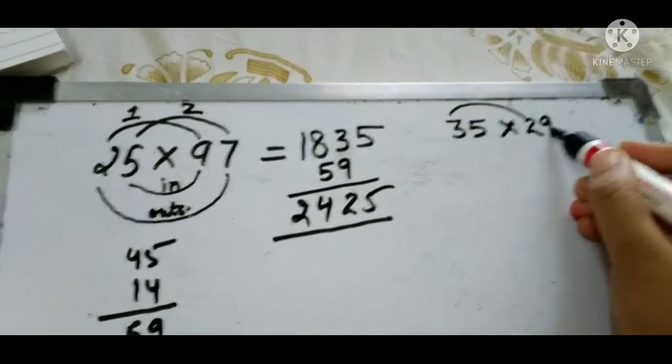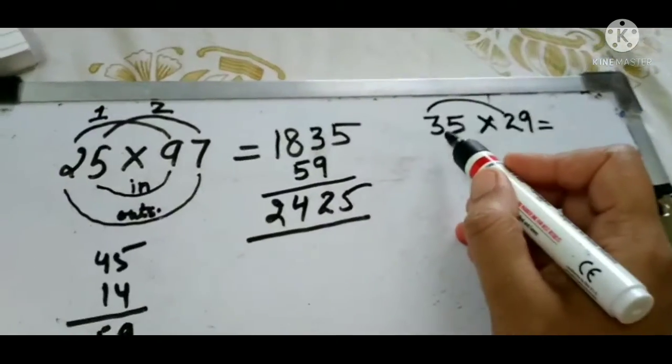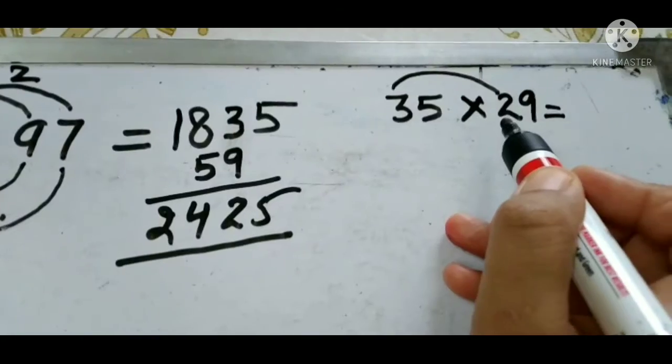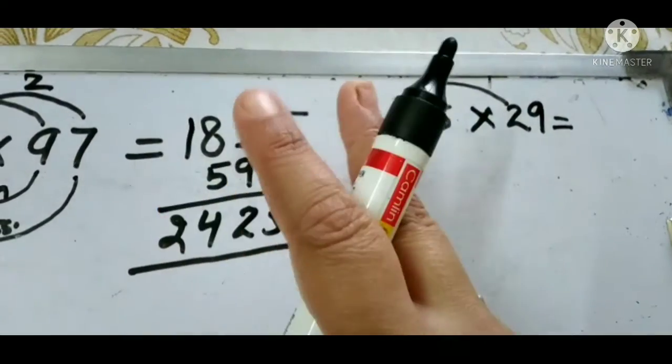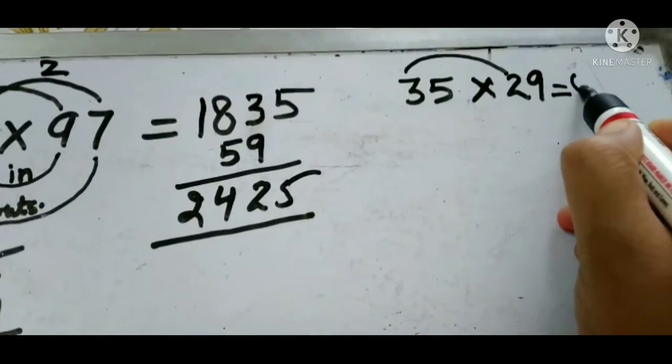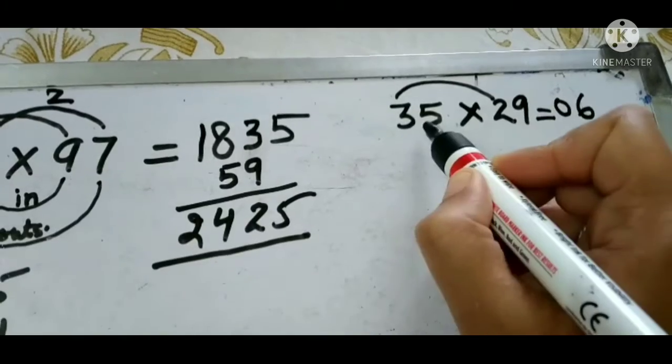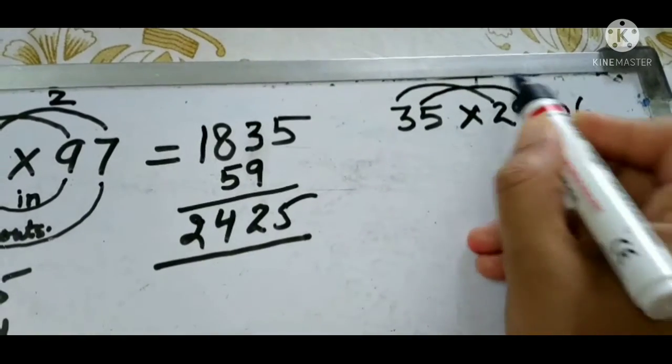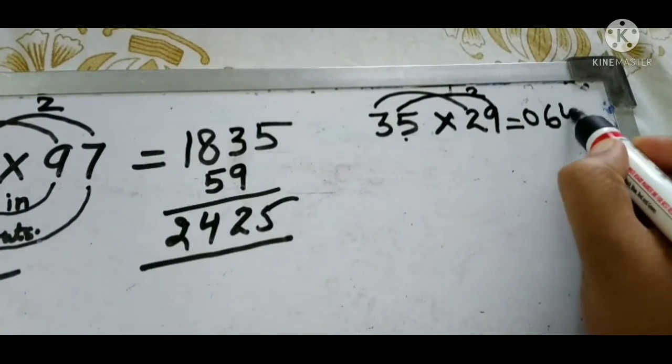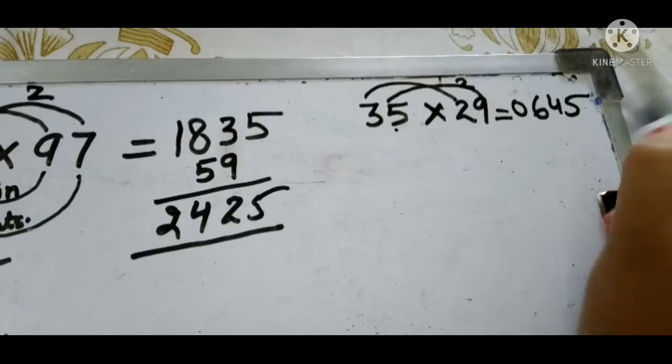One thing I would like to tell you: you write the multiplication of any number. 3×6, so we write 06. Then second number 5 and 2, these are second digits, so 5×9 is 45. Understood?